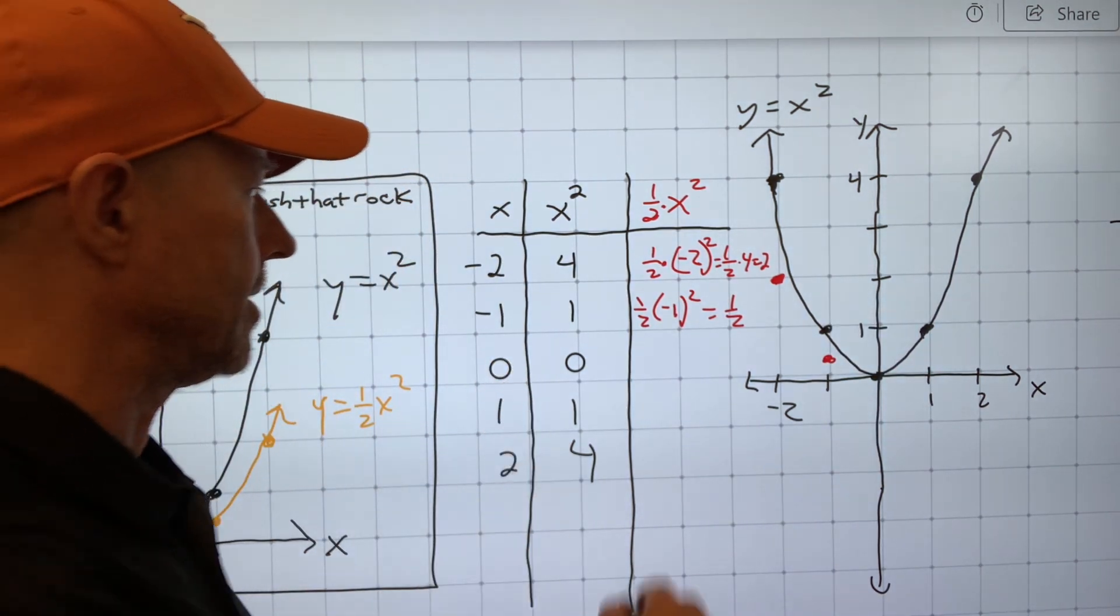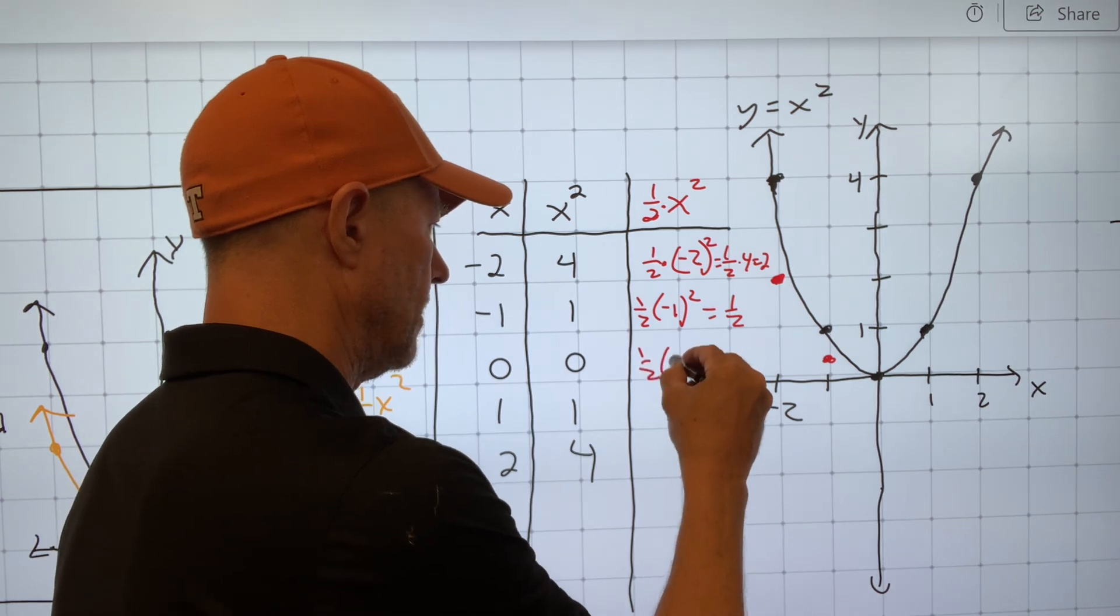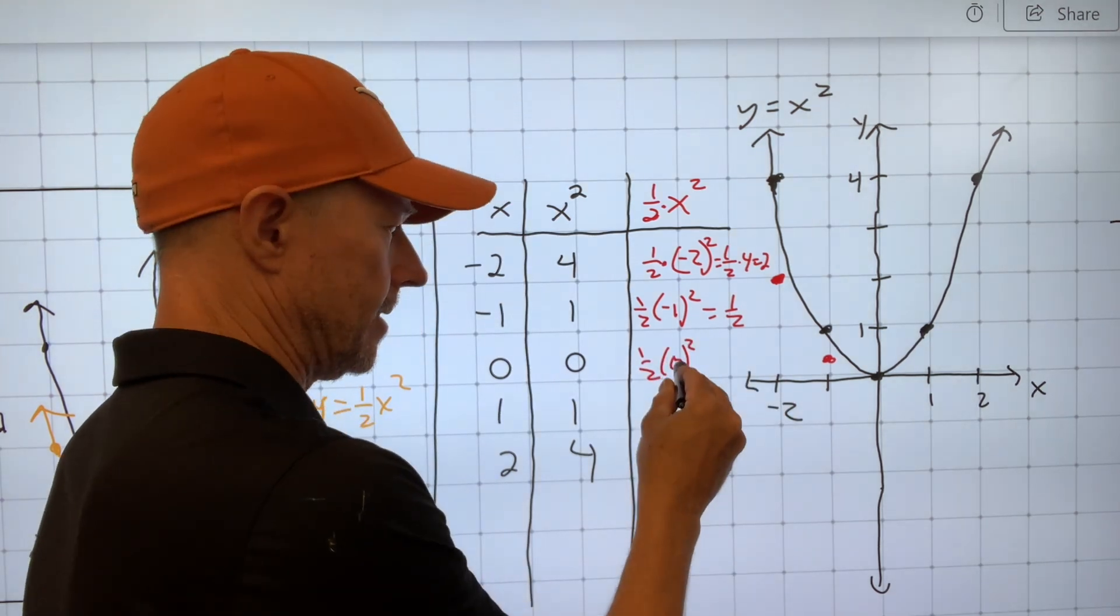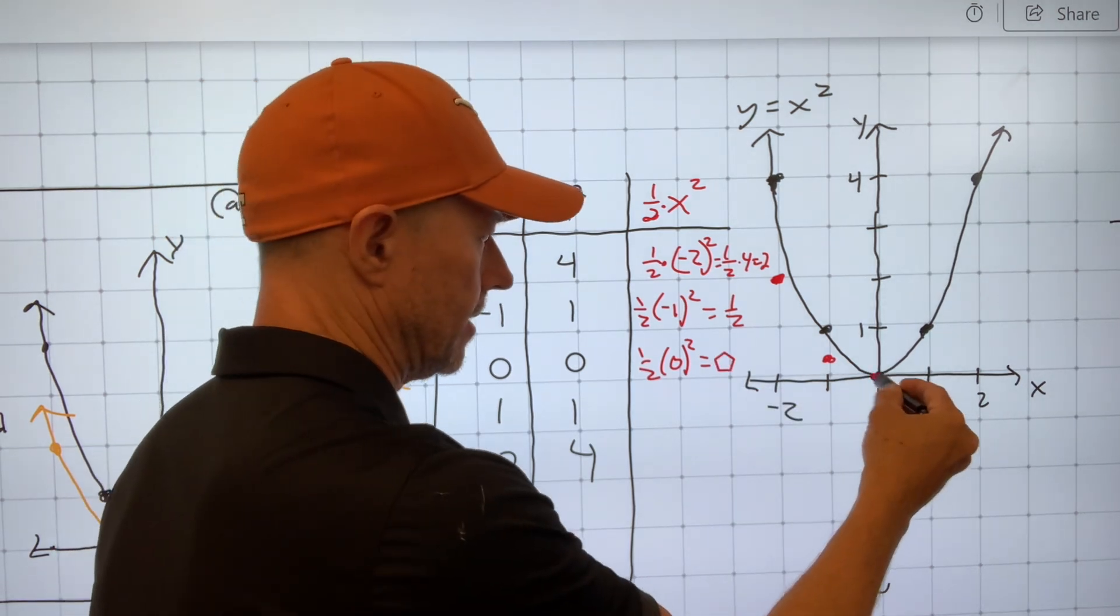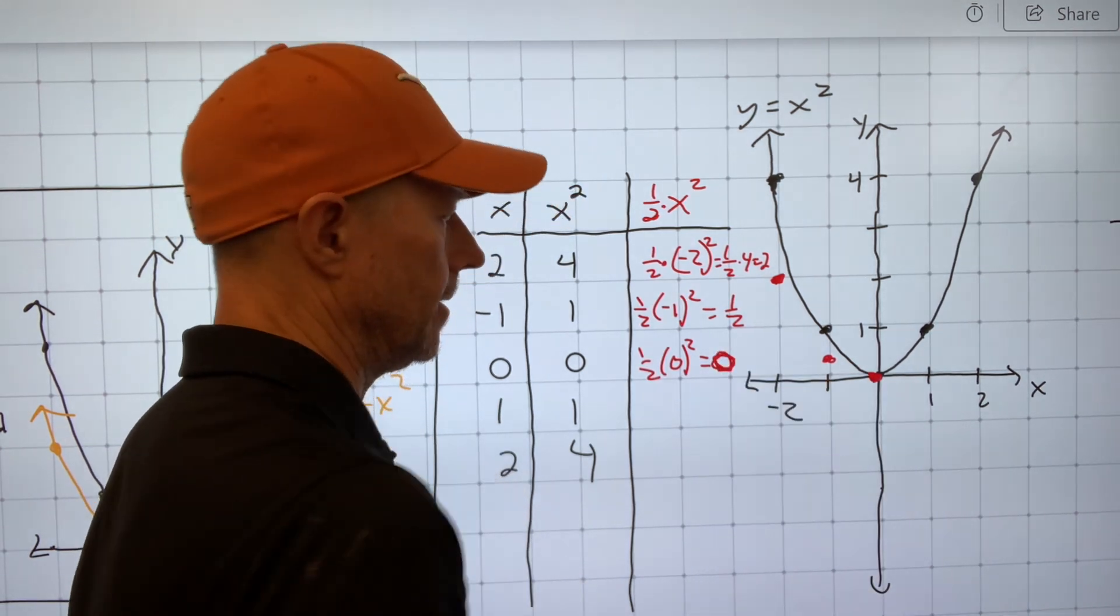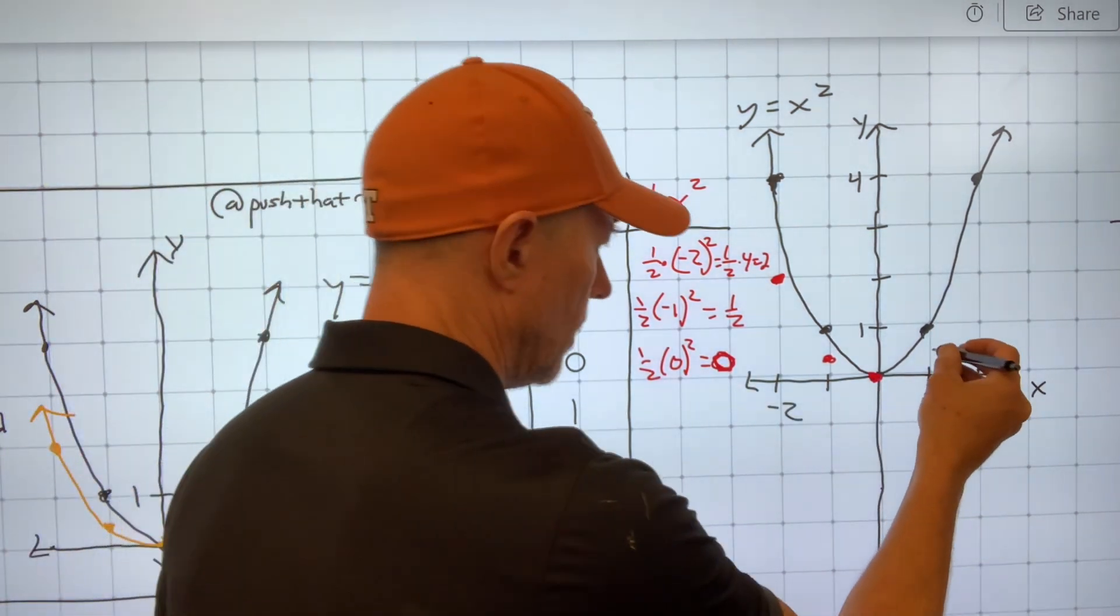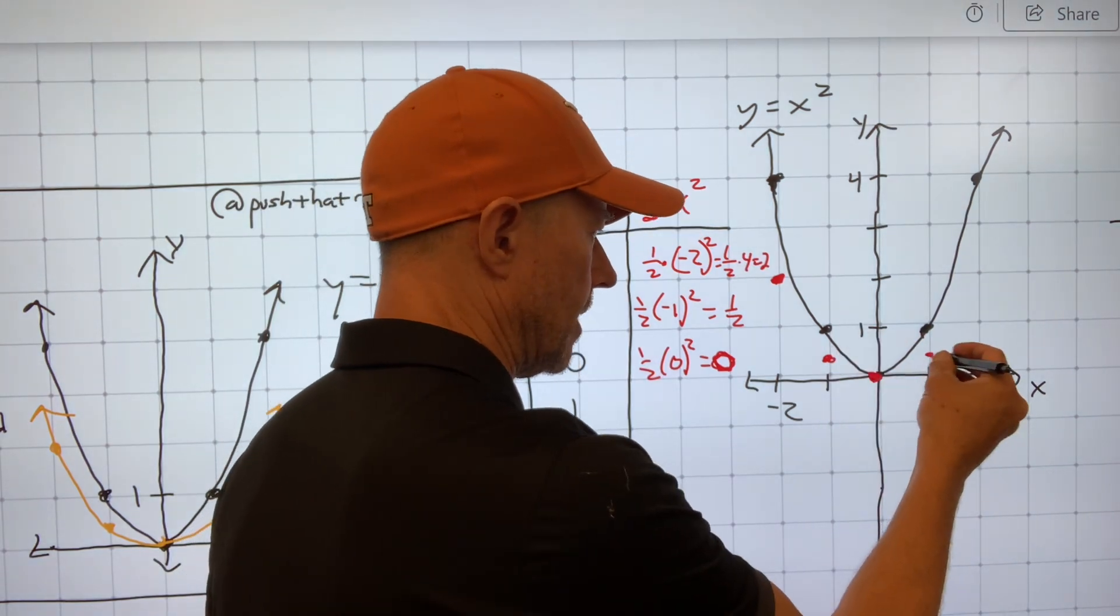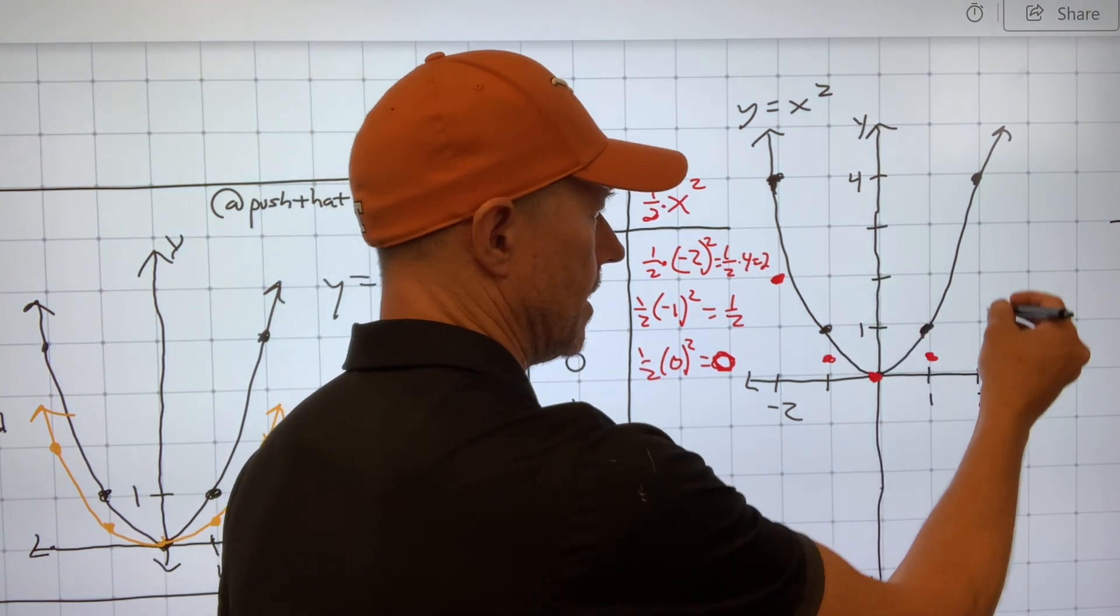So this point, when I put in negative 1, I get out a half instead of 1. Now, when I put in 0, nothing happens. 1 half times 0 squared is 0 times a half is 0, so I still get this 0. And 1, the same thing that happened in negative 1 is going to happen to 1. The same thing that happened in negative 2 is going to happen to 2.